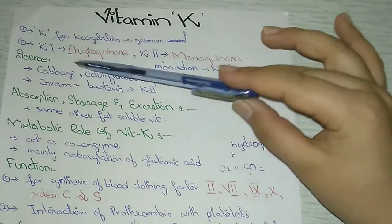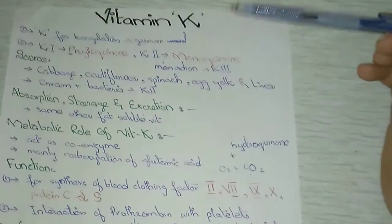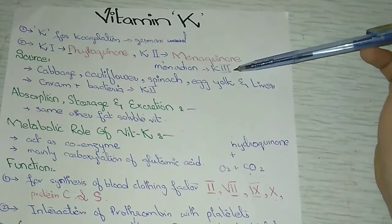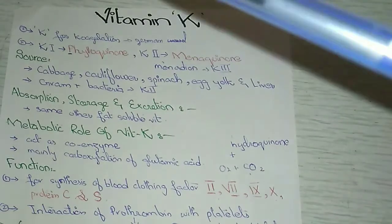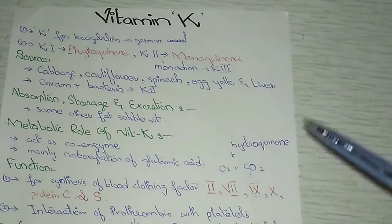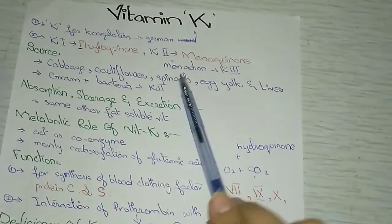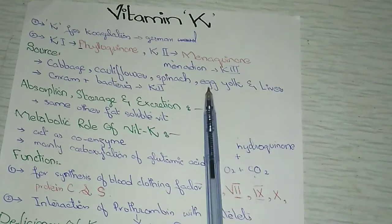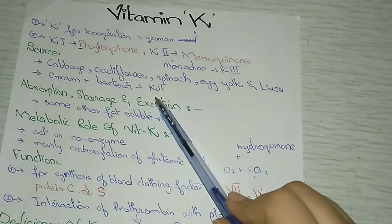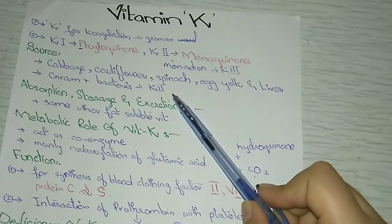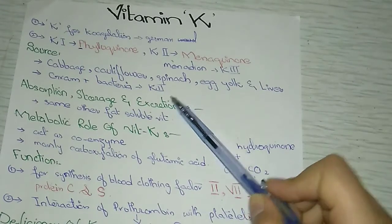Now we're going to talk about the sources of vitamin K. The first source includes cabbage, cauliflower, spinach, egg yolk, and liver. The second important source is the normal bacterial flora of the gut, especially gram-positive bacteria, which synthesize vitamin K type 2. So these are the two important sources from which vitamin K is obtained.